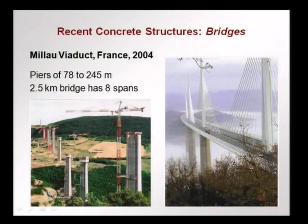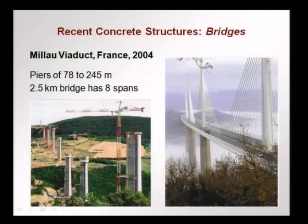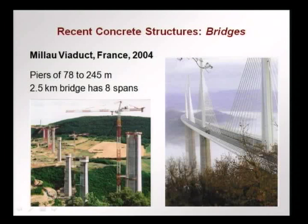The Millau Viaduct in France, built in 2004, has piers up to 240 metres in height. It is a 2.5-kilometre cable-stayed bridge with 8 spans — a very elegant structure. You can see the piers coming up, the temporary cranes and support systems for launching the girders on the deck, and then how the structure looks after construction. It had the highest piers built in any bridge.